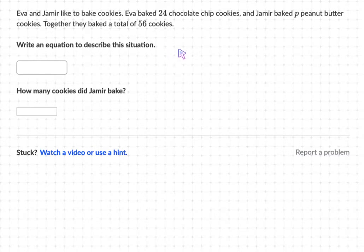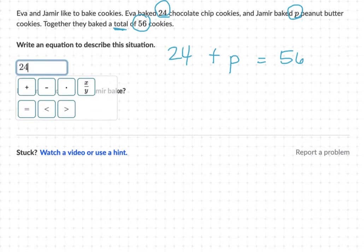Okay, so Eva baked 24 cookies, chocolate chip cookies, Jameer baked P peanut butter cookies. All together they have a total of 56 cookies. So you have to write an equation. Total tells me that I'm adding things together. Eva baked 24, and Jameer baked who knows how many, P, amount of peanut butter cookies. But together they baked 56 cookies. So this should be your equation. Eva's amount plus Jameer's amount gives us that total of 56. 24 plus P equals 56.